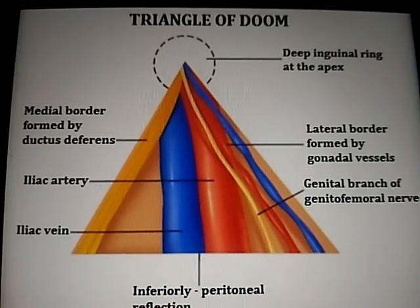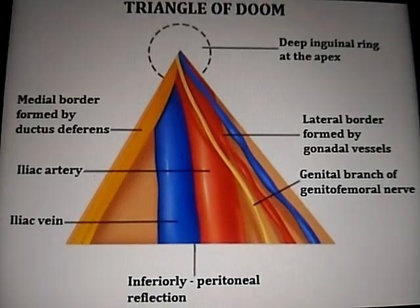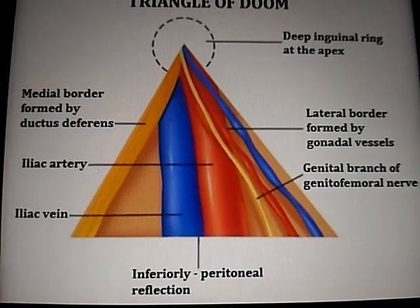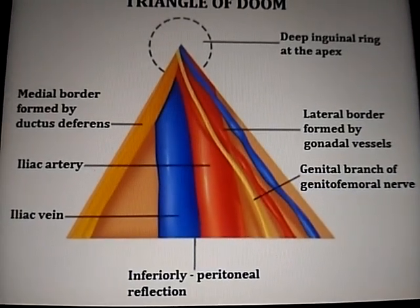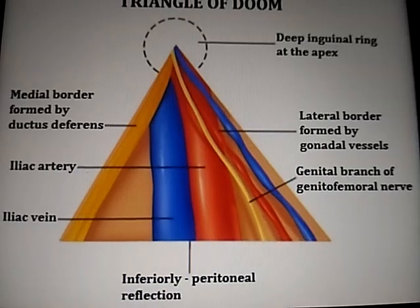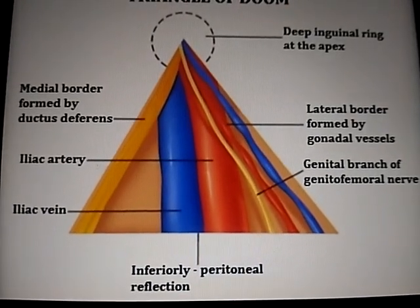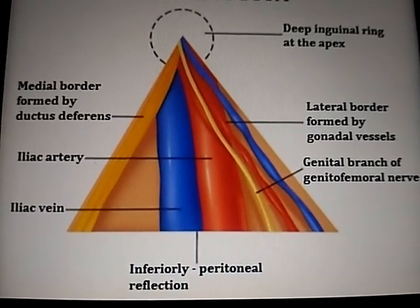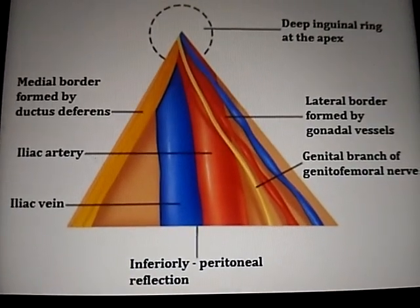Triangle of Doom. The apex of this triangle of doom is at the deep inguinal ring. The lateral border is formed by gonadal vessels, the medial border is formed by ductus deferens or vas deferens, and the inferior border is by peritoneal reflections.